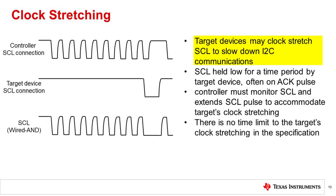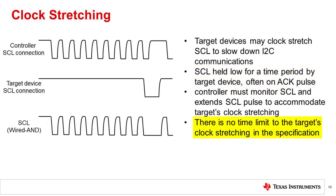In such cases, the target device may try to slow down the communication through clock stretching. After a target device receives a byte of data in transmission, it may hold down SCL longer so that the controller is required to adjust the clock. This is similar to clock synchronization. The controller monitors SCL and is forced to extend the SCL pulse if it determines that SCL is still low after the controller has released it. If clock stretching is supported by the controller, any SCL pulse can be clock stretched by the target device. However, the general implementation of clock stretching is done with the SCL pulse around the acknowledge bit.